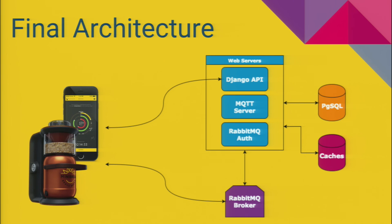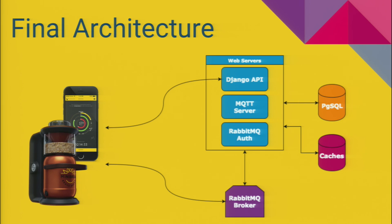Here is the final architecture — very small and simple. We have web servers, the three blocks we talked about: some endpoints for RabbitMQ, an MQTT listener and responder, and the Django API for the devices. We also have the RabbitMQ broker for devices, machines, and web servers to communicate. Plus database, cache, and everything usually used in a web platform. Everything is scalable because everything is in the cloud, and all those technologies are easy to scale.